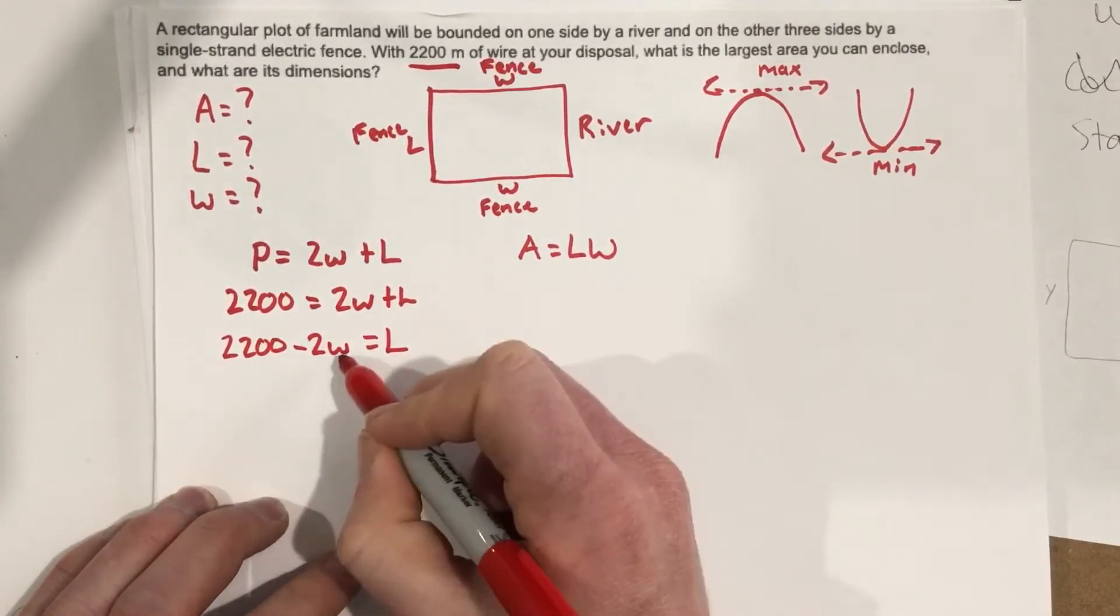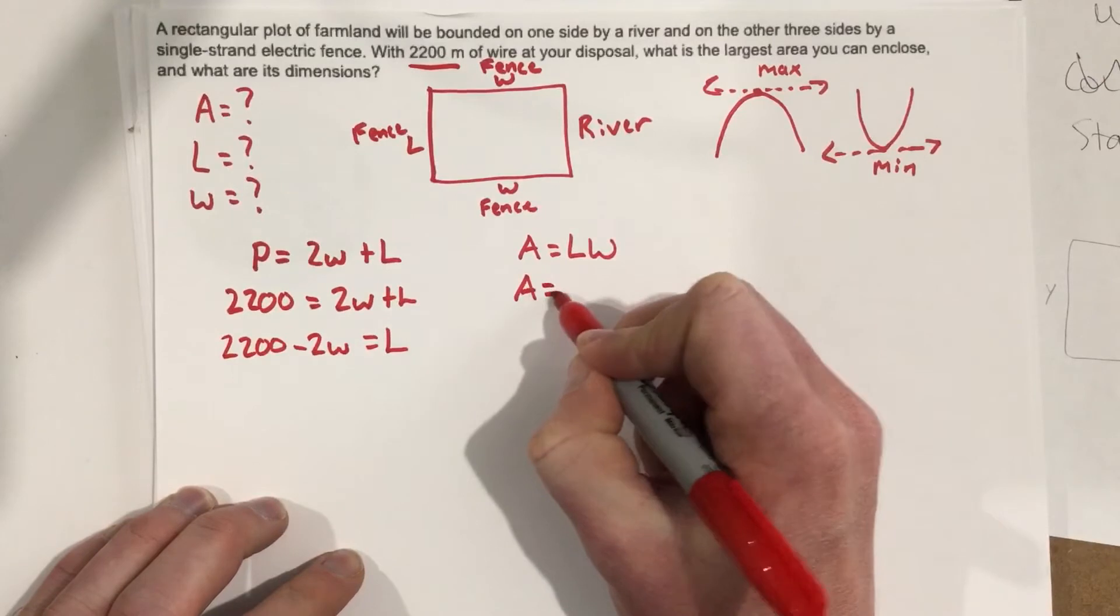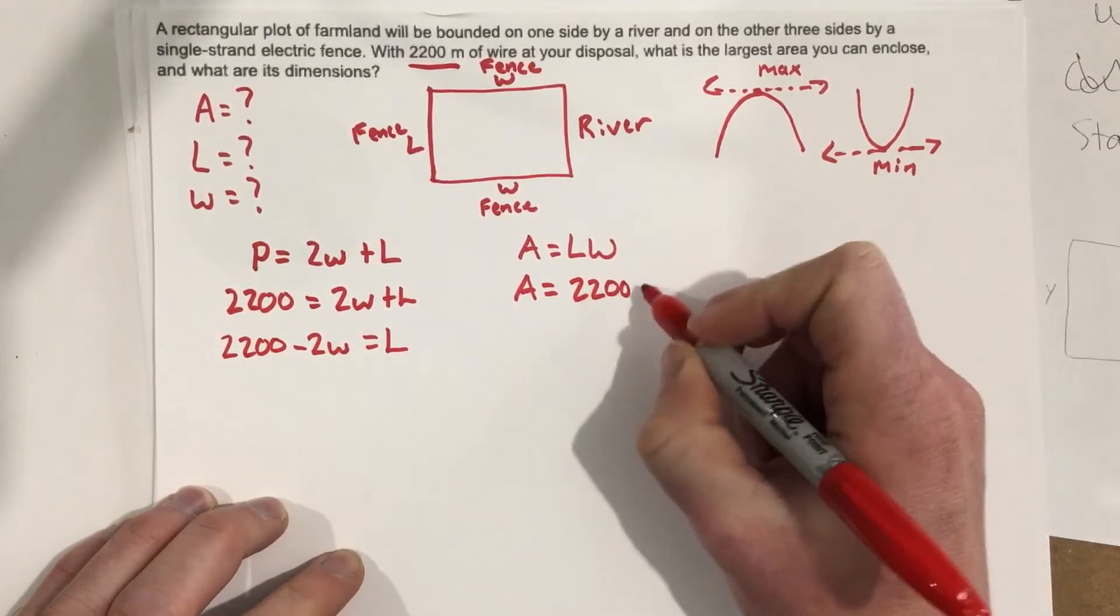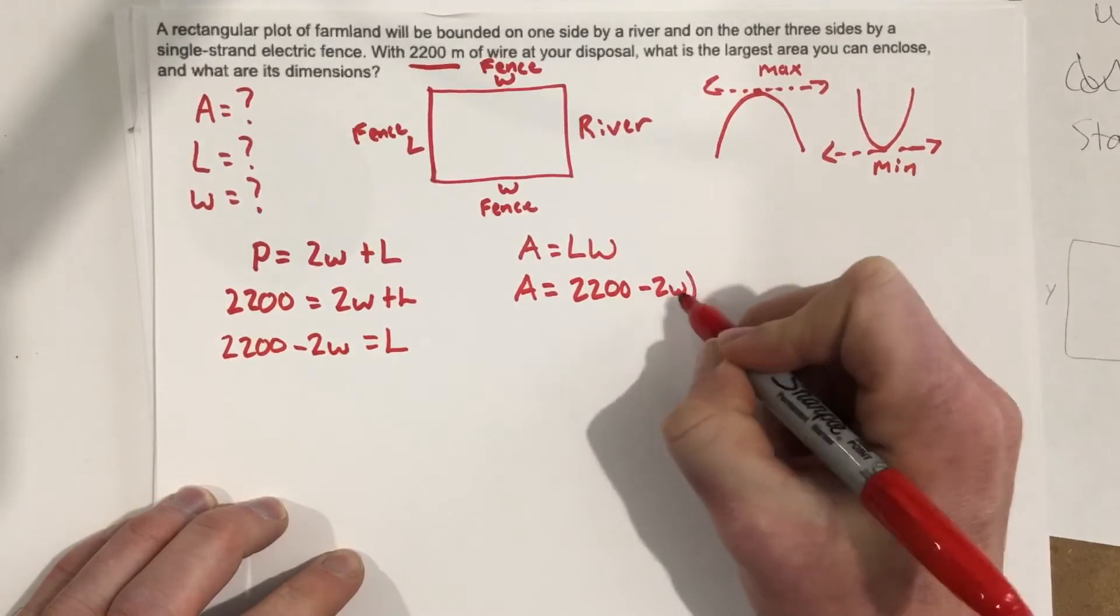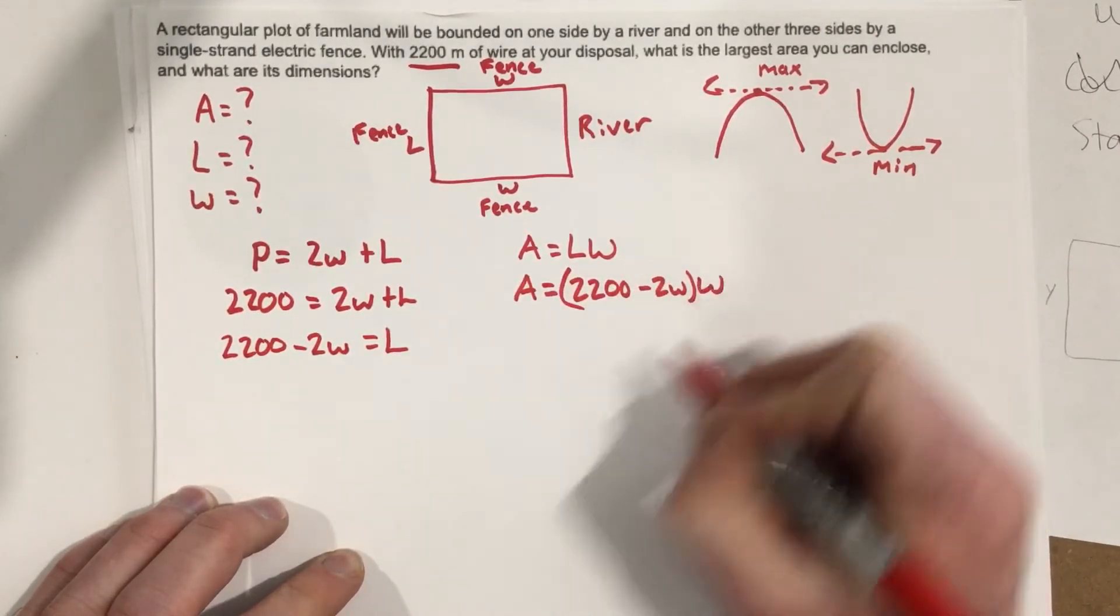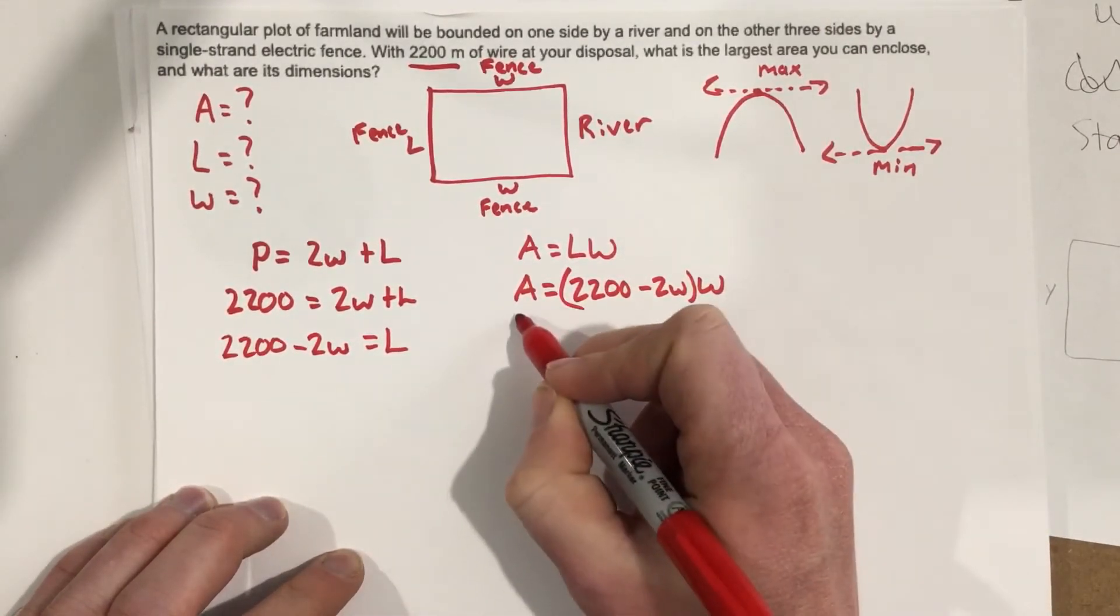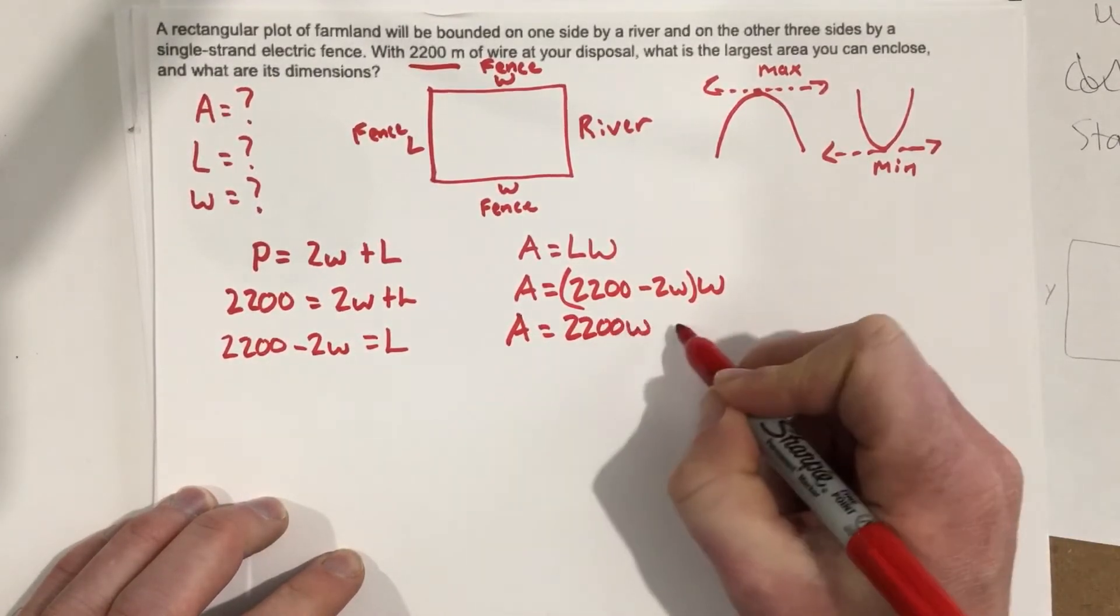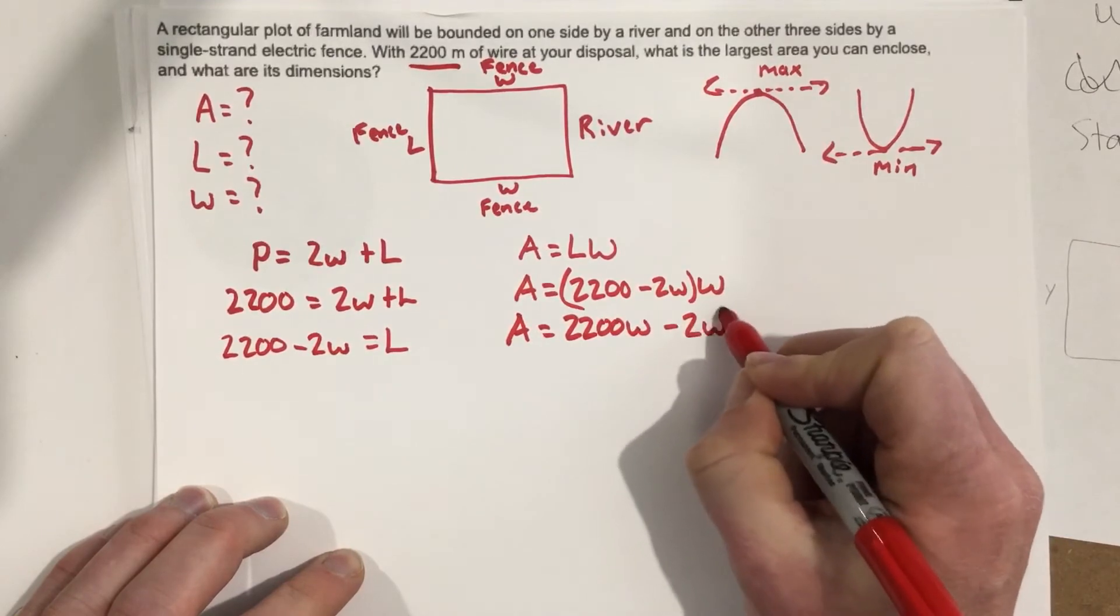Plug this into this equation, you get the area equals 2200 minus 2W times W. I can distribute that W, and I get 2200W minus 2W squared.